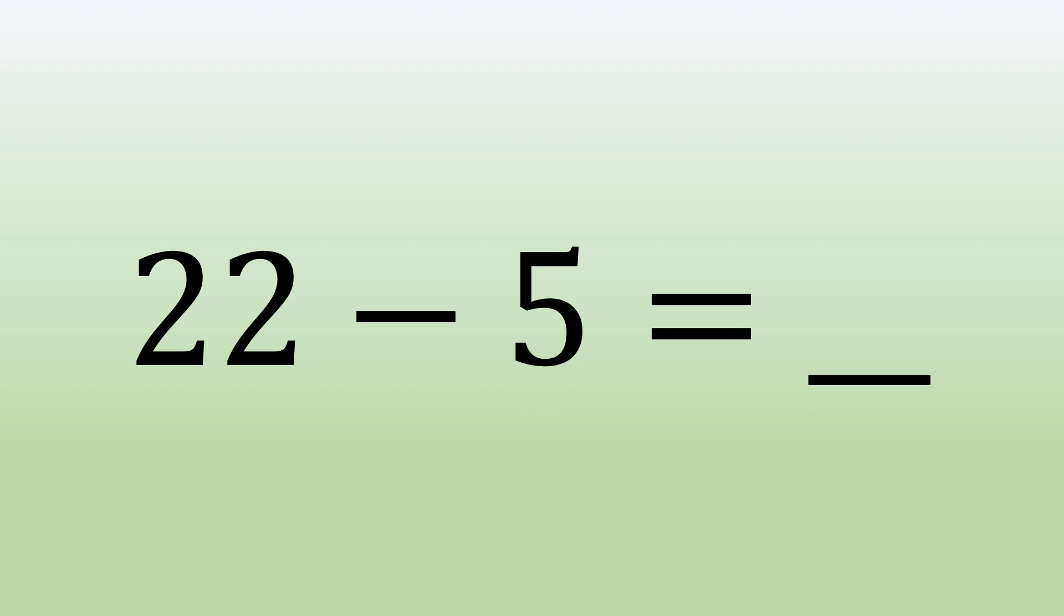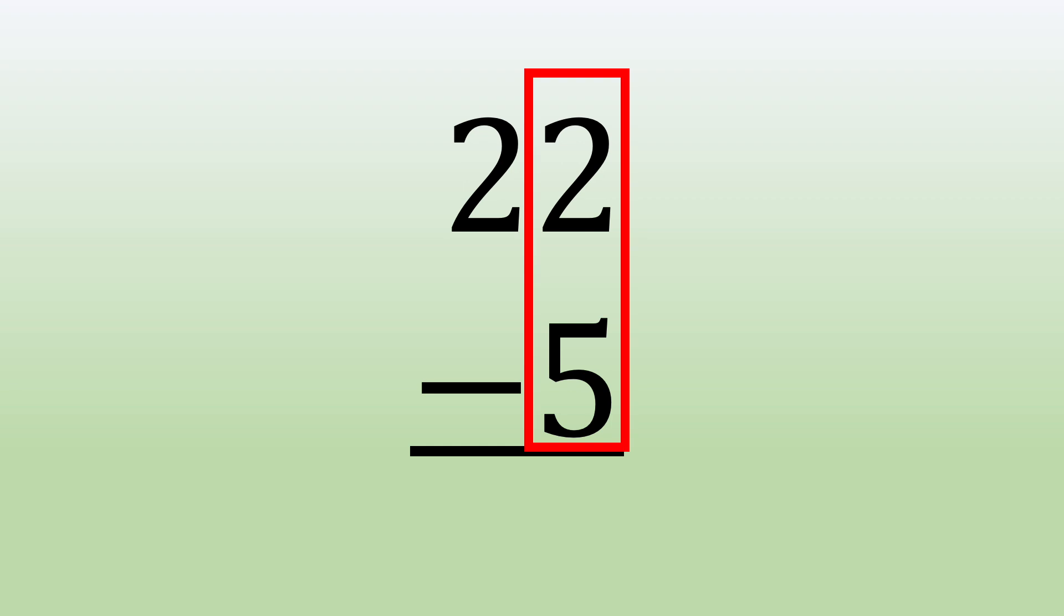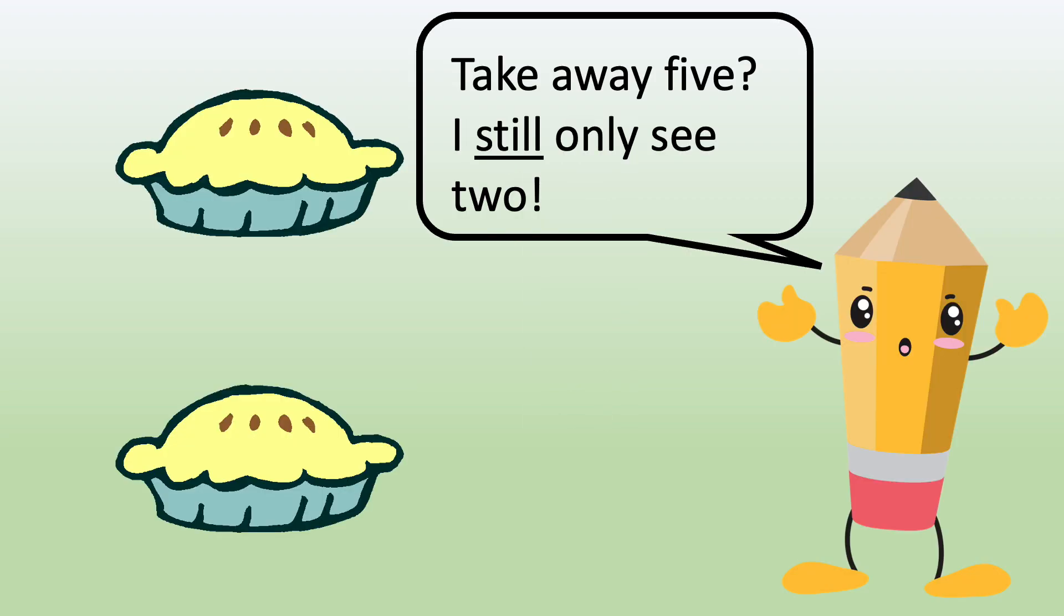Again, we stack the numbers and subtract in the ones. We can't take 5 away from 2. There aren't enough. So, that gives us a clue that we need to regroup.